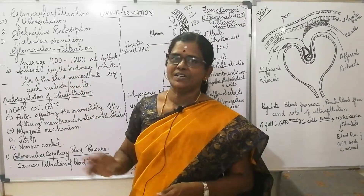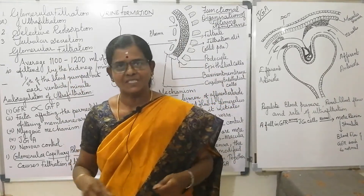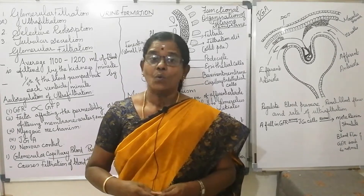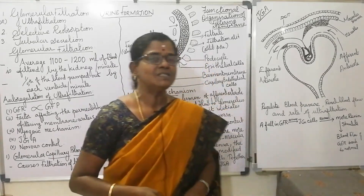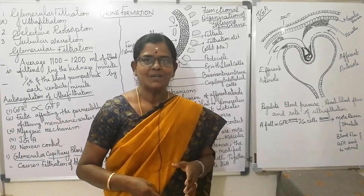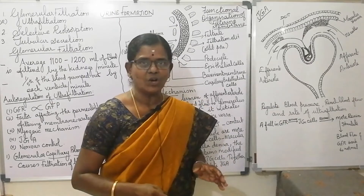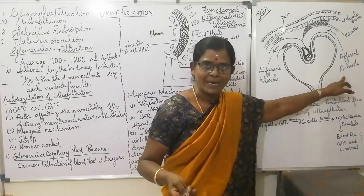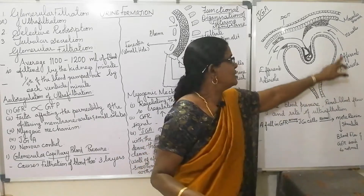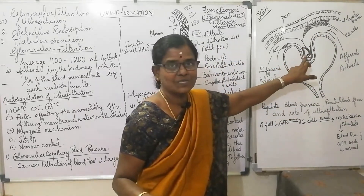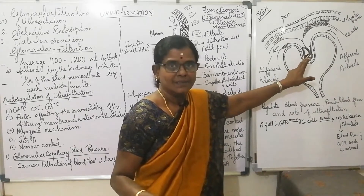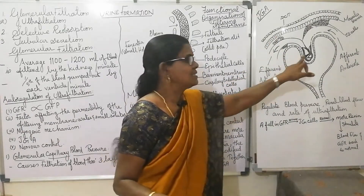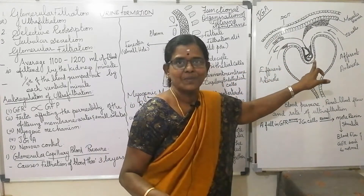What is glomerular filtration? Glomerular filtration is the first step in urine formation. This filtration takes place in the glomerulus. The glomerulus is the tuft of capillaries — blood capillaries formed by the branching of afferent arterioles. Afferent arterioles are a branch of the renal artery. These afferent arterioles branch in the Bowman's capsule and form glomerular capillaries, which join to form efferent arterioles. These capillaries are known as the glomerulus.